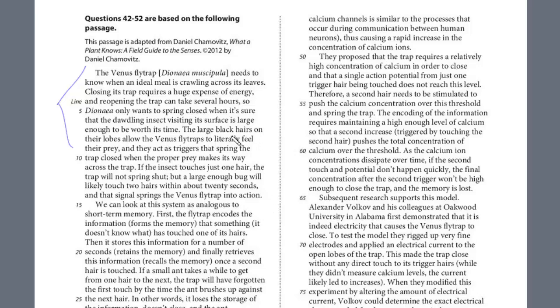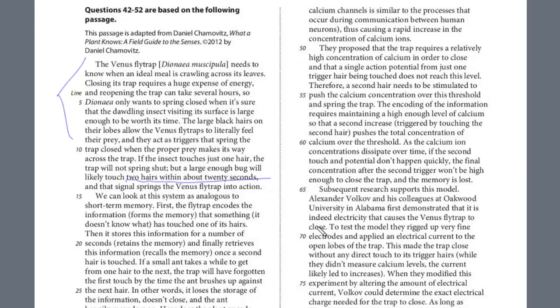So this is really explaining the mechanism of when the Venus flytrap closes. It doesn't just do it indiscriminately because it takes so much energy, and so it wants to make sure that the prey is large enough. There's this mechanism where it has to touch two hairs in 20 seconds, and that's the only way it will close shut to trap the prey. The rest of the passage explained exactly how this mechanism was created, what was the means. Let's take a look at the questions.